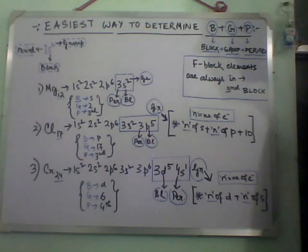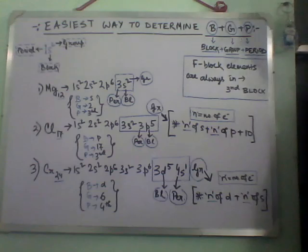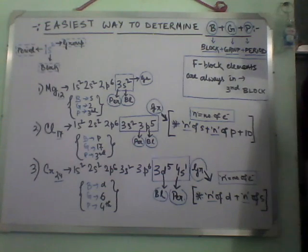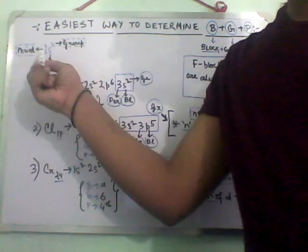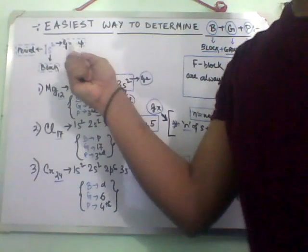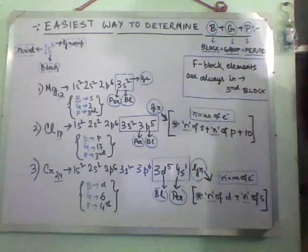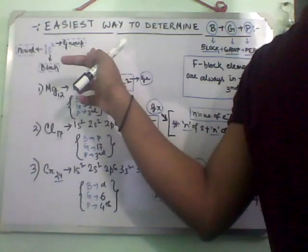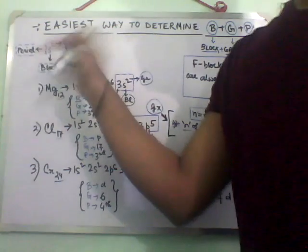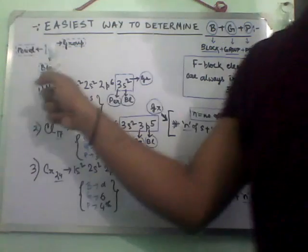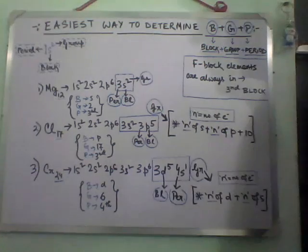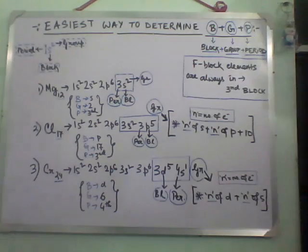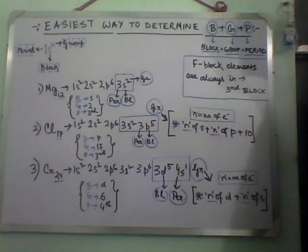Today we are going to learn the easiest way to determine block, group, and period of an element. I have given a criteria: the electronic configuration will determine the group, the ground state configuration will determine the block, and this will determine the period. By some examples I will show, and you can find it out within seconds.